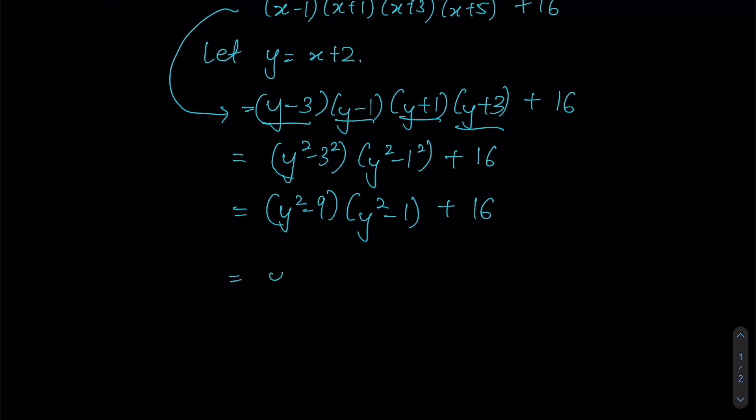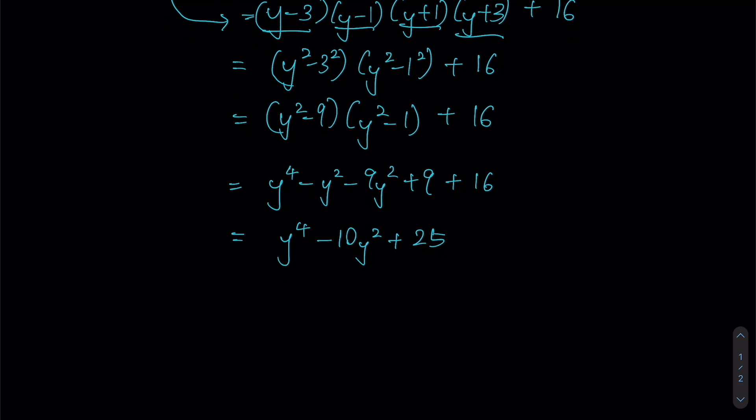y² multiplied by y² gives us y⁴ - y² - 9y² + 9, because -9 times -1 gives us +9, plus 16. Simplifying this we have y⁴ - 10y² + 25.